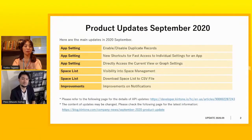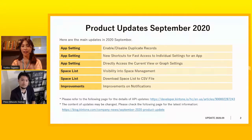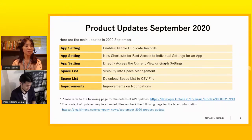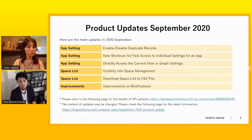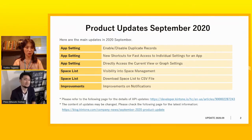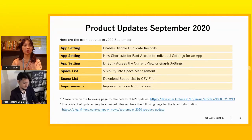Here are the main updates of September. What is the highlight, Pesa-san? Well, I think the biggest update is that there is a shortcut to the app setting. So let's take a look at each update.